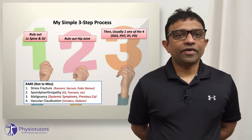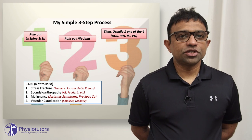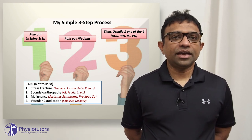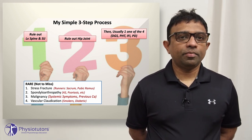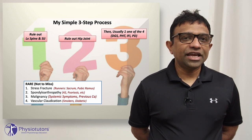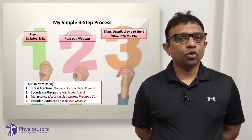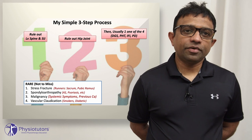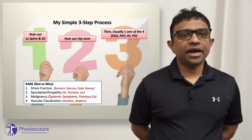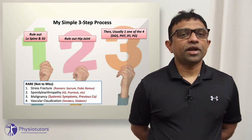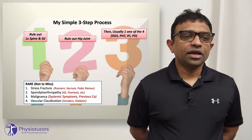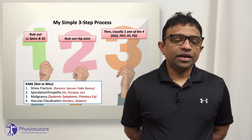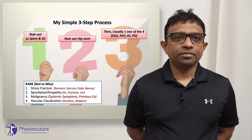The fourth red flag is vascular claudication. Somebody who is a smoker or diabetic complaining of bilateral buttock pain may have a circulatory cause — they might get cold feet and hands, and severe buttock pain when they walk. These patients may need referral to the vascular department. This highlights why buttock pain is such a difficult area, as so many conditions can refer into it.